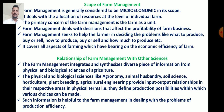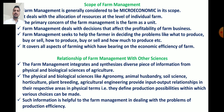Farm management seeks to help the farmer in deciding problems like what to produce, what to buy or sell, how to produce, where to buy or sell, and how much to produce. Farm management helps the farmer to overcome such problems — for instance, in a particular season, what to produce, how to sell, from where to sell, and how much to keep. Farm management decisions cover all aspects of farming which have a bearing on the economic efficiency of the farm.